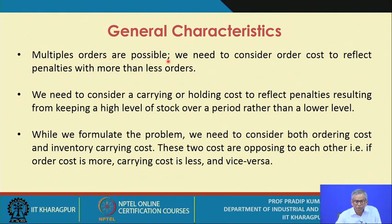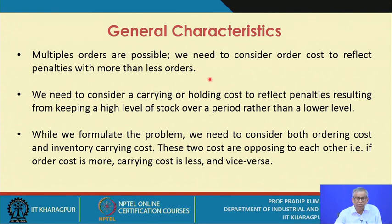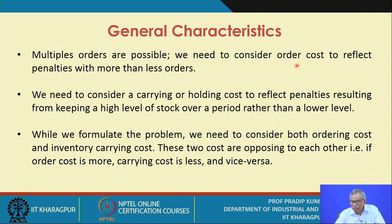Multiple orders are possible, so we need to consider order cost to reflect penalties with more or fewer orders. We are referring to the kinds of relevant costs to consider when formulating this problem. As multiple orders are possible, you need to place an order for a given item — in the outside supply case — and carry out certain activities, each with an associated cost. Considering all individual cost elements gives an estimate of the ordering cost — the first type of cost to consider.